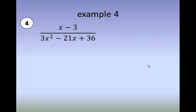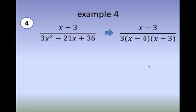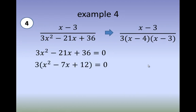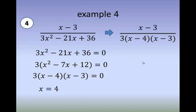Example number 4: X minus 3 over 3X squared minus 21X plus 36. We can factor the denominator — first taking the GCF of 3, giving 3 times the quantity X squared minus 7X plus 12. However, this is a quadratic trinomial that can be factored further. The complete factored form of the denominator is 3 times X minus 4 times the quantity X minus 3. Getting the zeros of the two variable factors, we get X equal to 4 and X equal to 3. Therefore, the excluded values are 4 and 3.